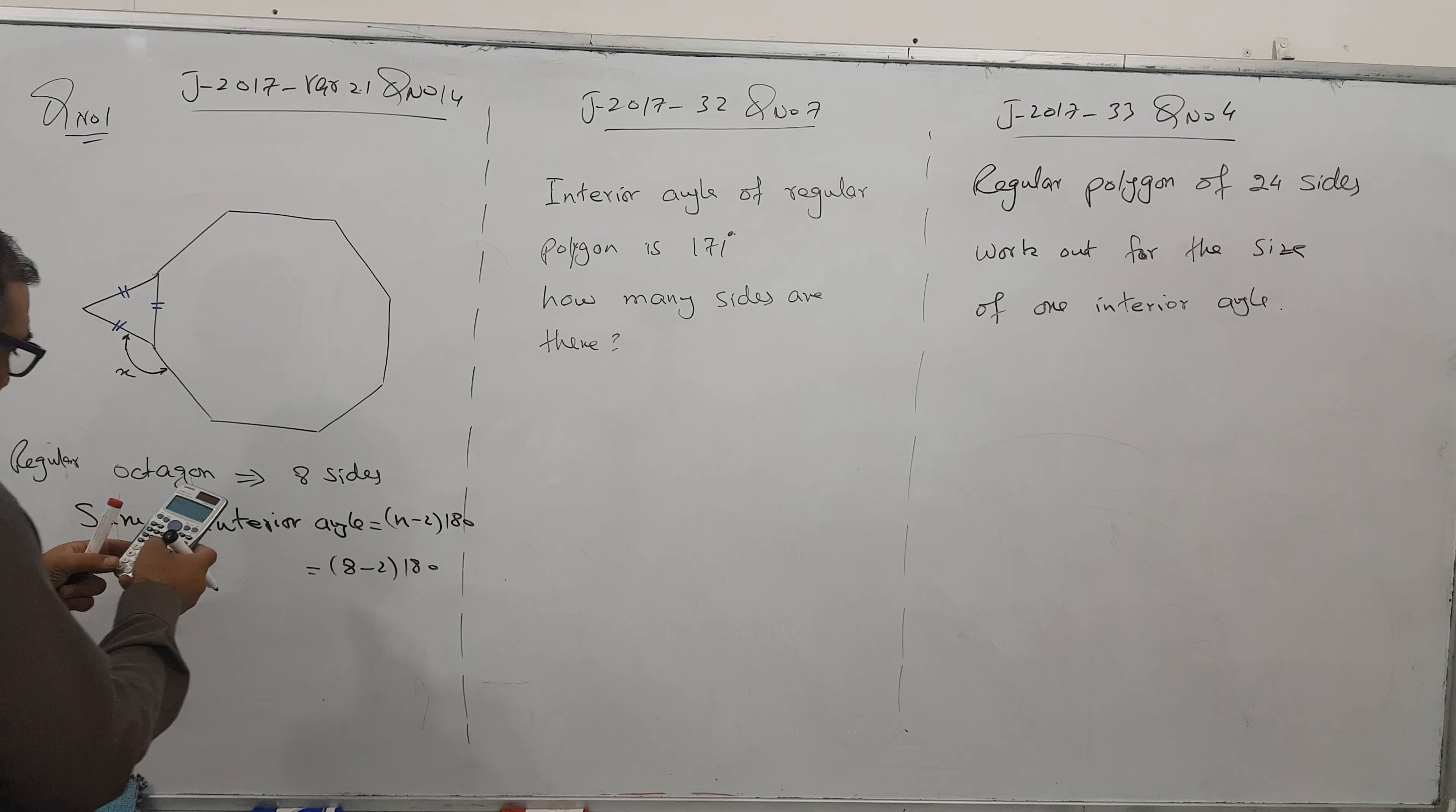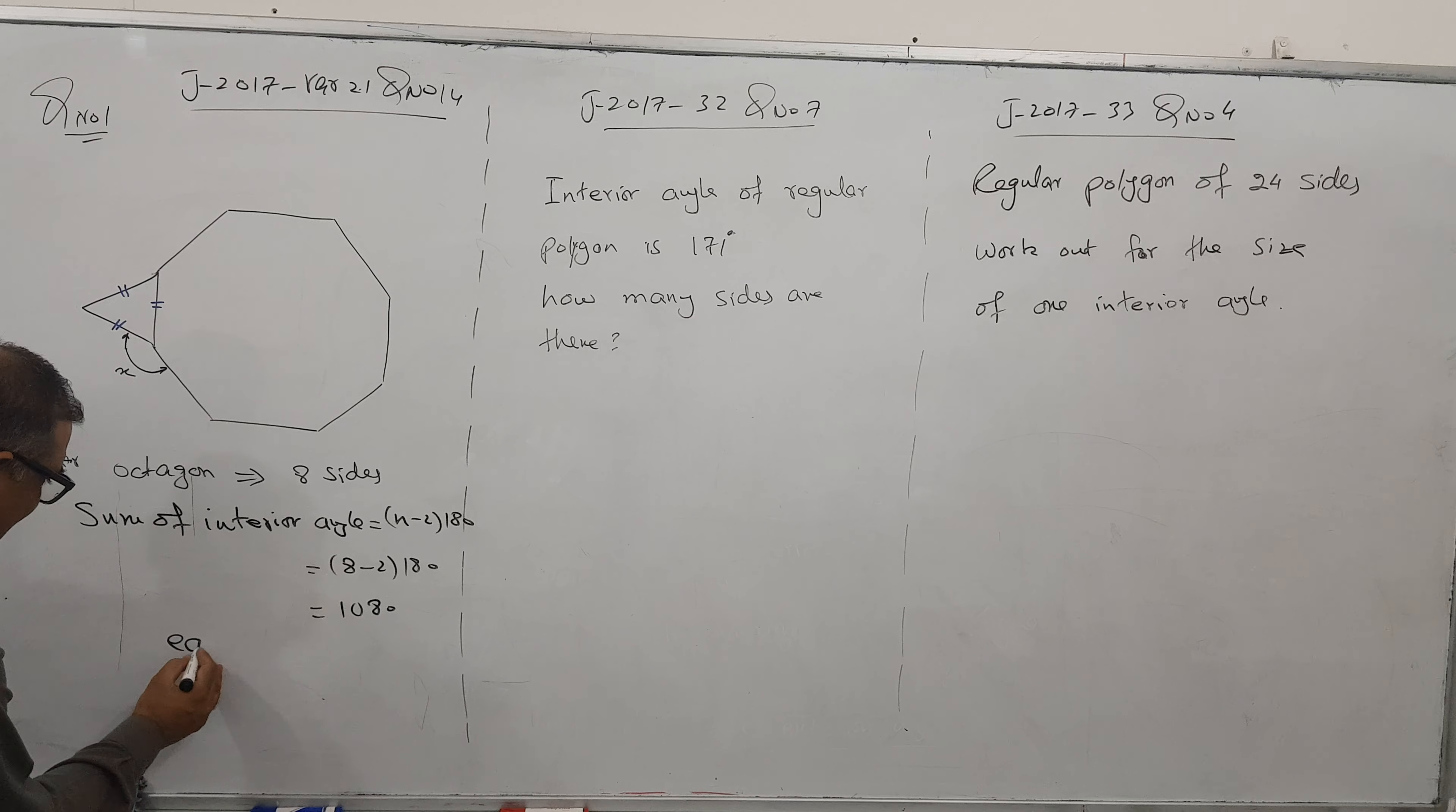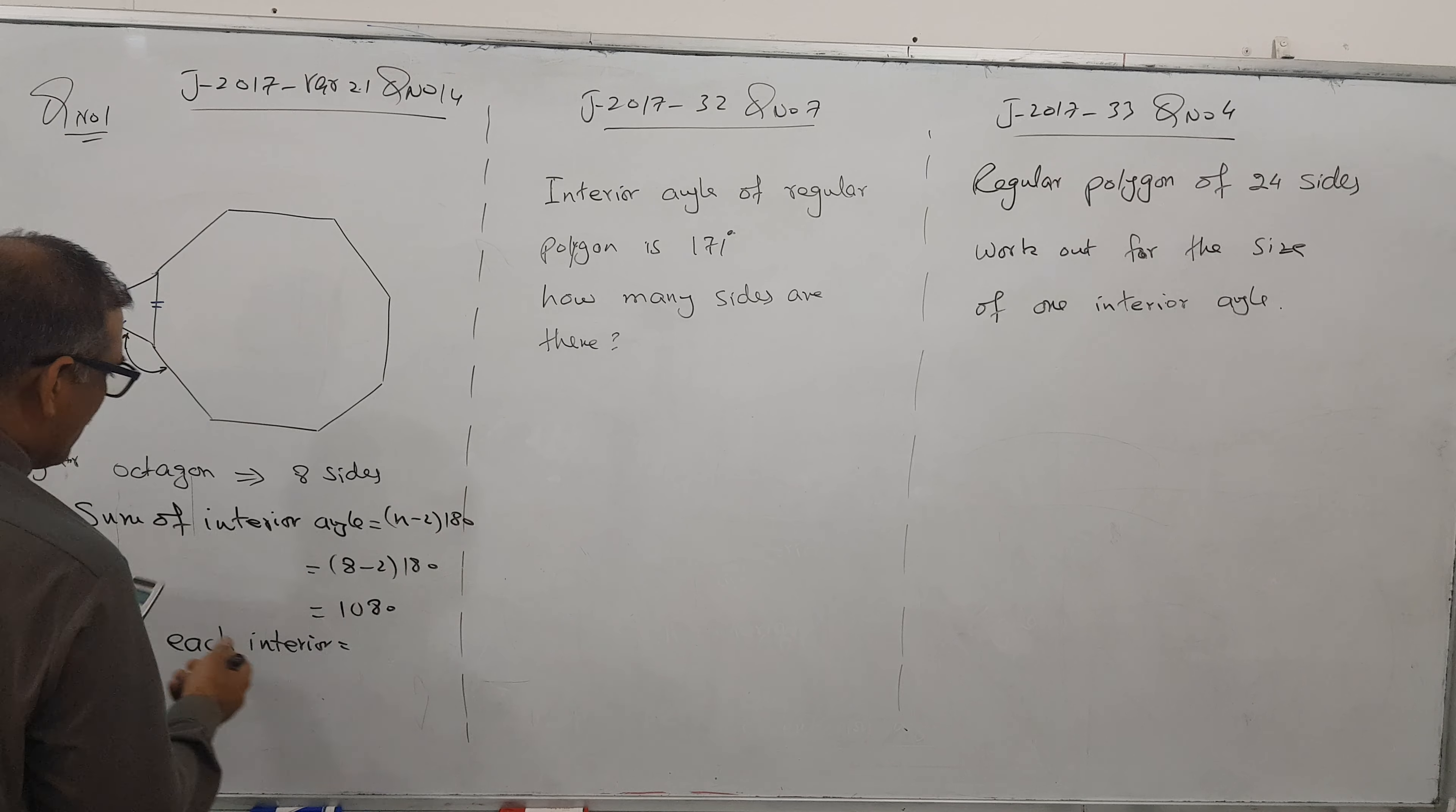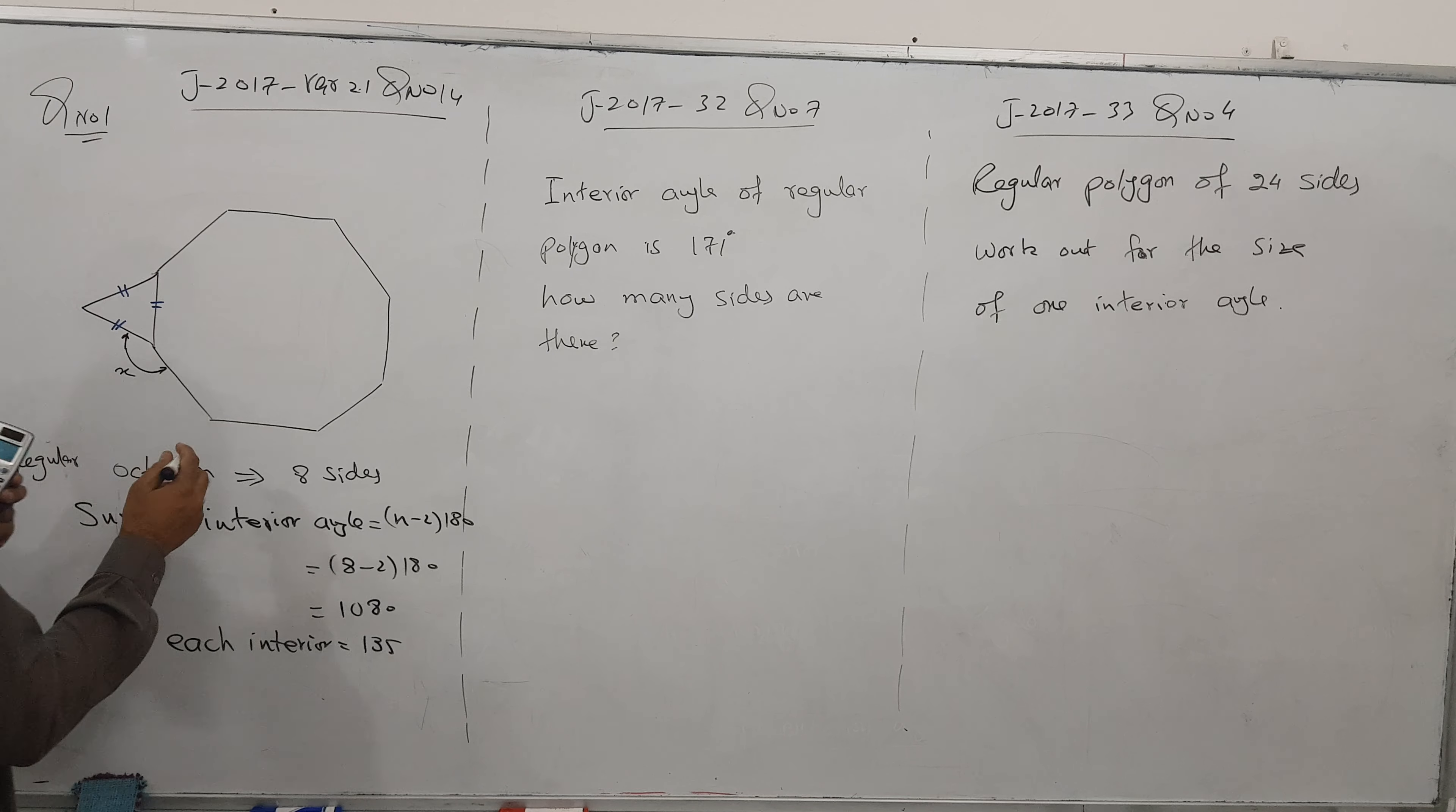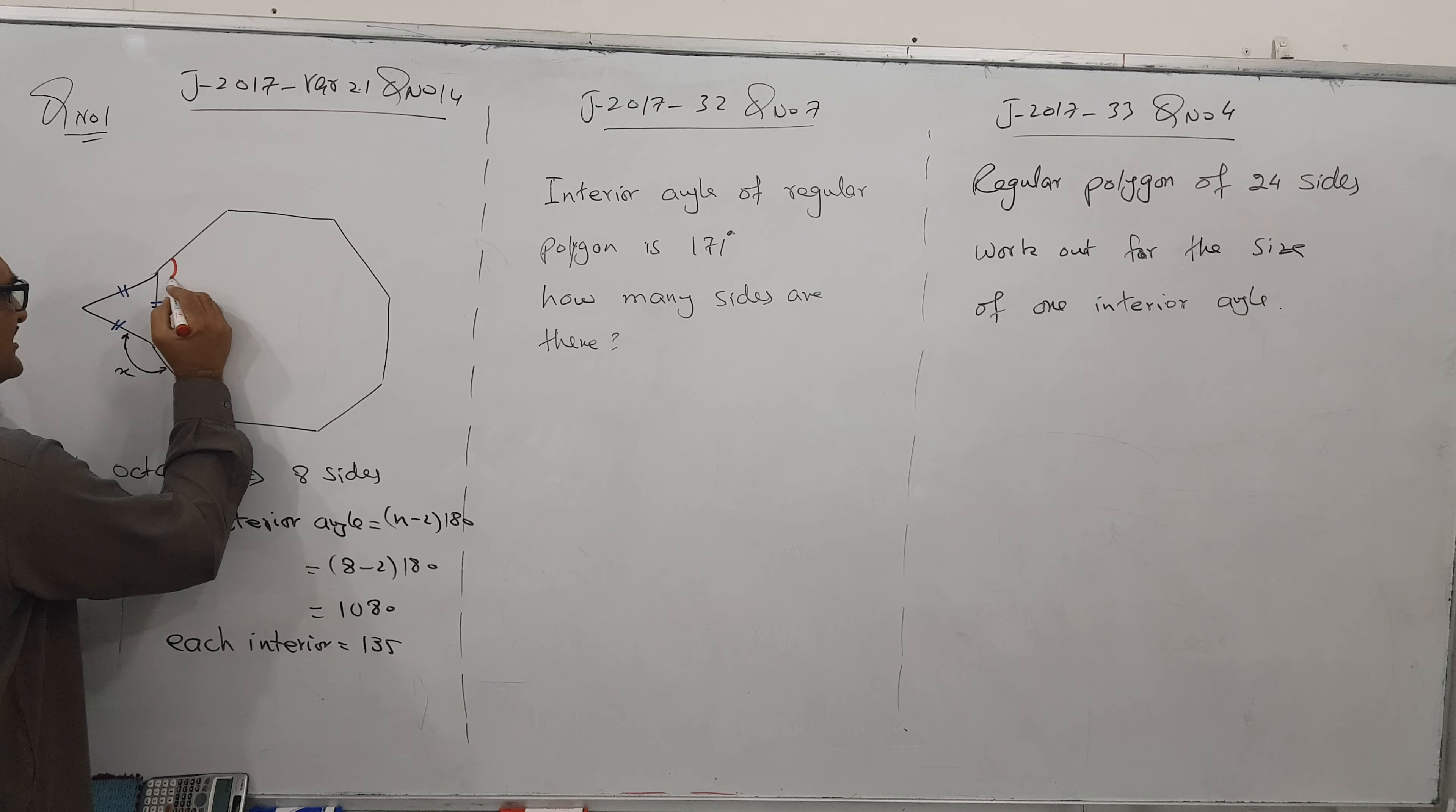6 times 180 becomes 1080. So what is each angle? Each interior angle - simply divide by n or divide by 8. So we've got 135. So we can see that each angle is 135.